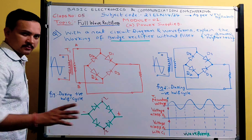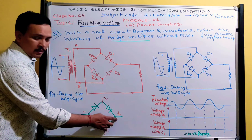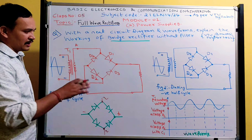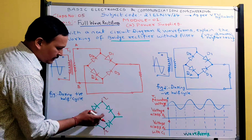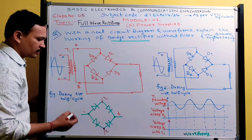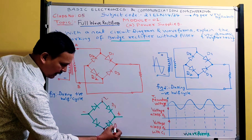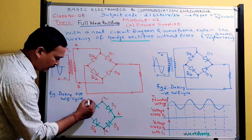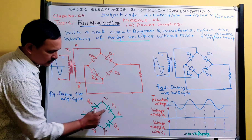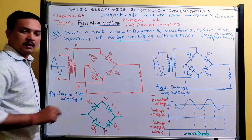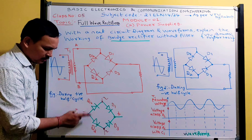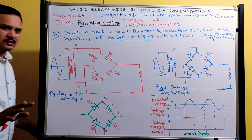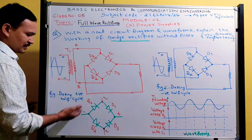Keep in mind: both anodes at one point, both cathodes at another point, with series diode connections in between. For numbering the diodes: right-side diodes are odd numbers (D1, D3) and left-side diodes are even numbers (D2, D4). Start D1 at the bottom-right, then D3 above it. The difference between adjacent diode numbers should always be two.